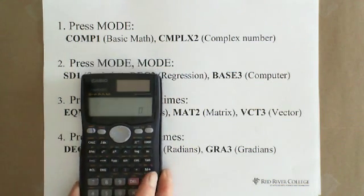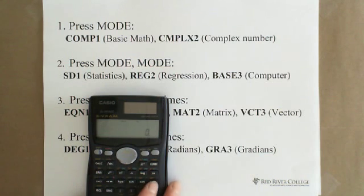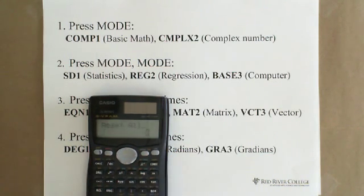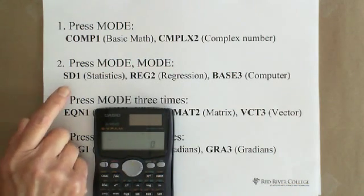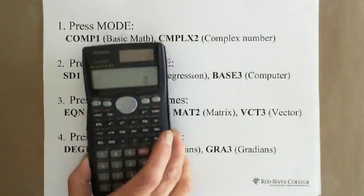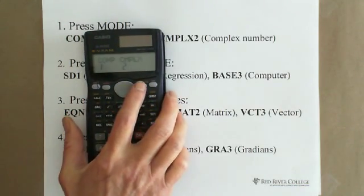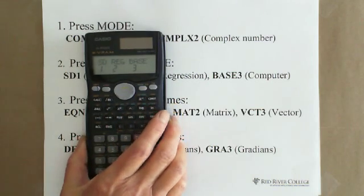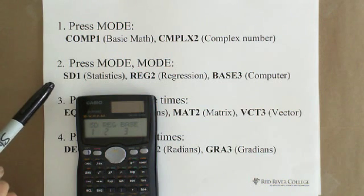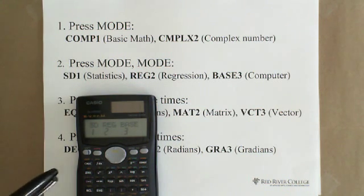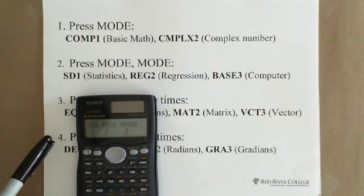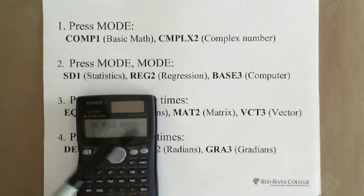And then second, if you go to press mode and mode, press twice. And you can see, press mode mode. The first is SD1 which is statistics standard deviation, REG2 is regression, BASE3 is computer base mode.